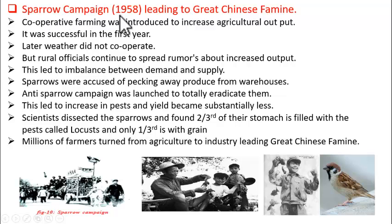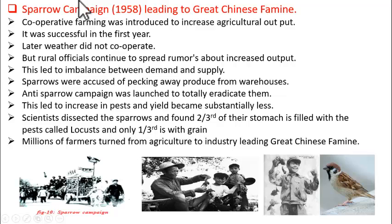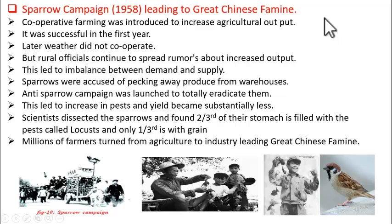Around the year 1958, the Chinese government had introduced a new way of farming called cooperative farming, to increase the country's agricultural output and to stand competitive with developed countries like America and Russia.